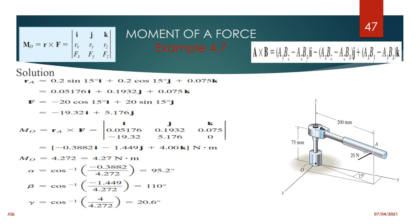This example might look complicated, but just go through it once and you'll appreciate it is actually very simple. There is no magic — just understand why it is sin 15 in one place and cos 15 in another. Someone might think where we should use sine versus cosine, but just go through it carefully and you will understand. The answer follows logically from the geometry.